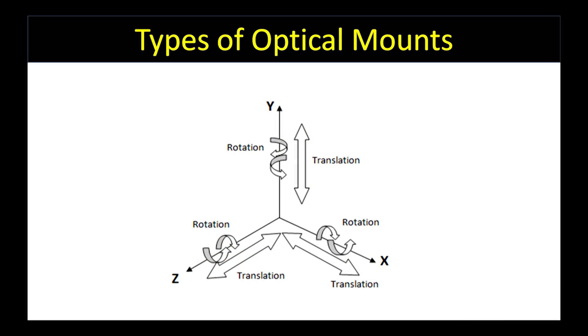It is also important to consider how finely the adjustment must be made and the total adjustment range available. We refer to the different translation and rotation adjustments that are available as degrees of freedom. Every object has six degrees of freedom. In a standard coordinate system, these degrees of freedom are translation in X, Y, and Z and rotation about the X, Y, and Z axes, as seen in this diagram.